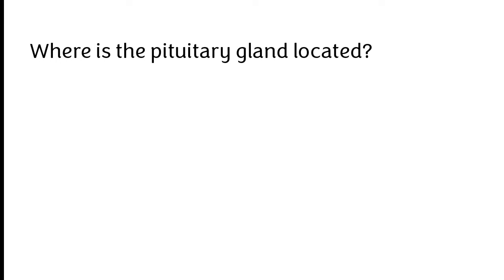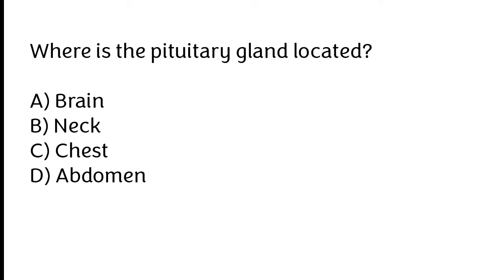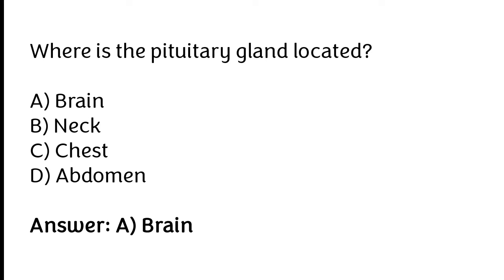Where is the pituitary gland located? Brain, neck, chest, or abdomen. The correct answer is option A. The pituitary gland is located in the brain.